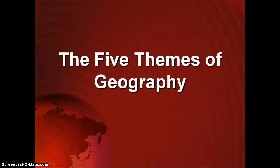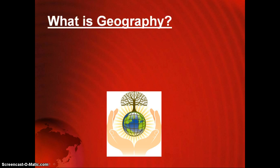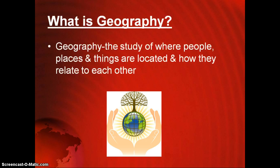Today we are going to be talking about the five themes of geography. But before we can start, we first need to talk about what geography is. Simply put, geography is the study of where people, places, and things are located and how they relate to each other. This is a very broad term that can encompass a lot of different things, which is why people have broken down geography into five themes.